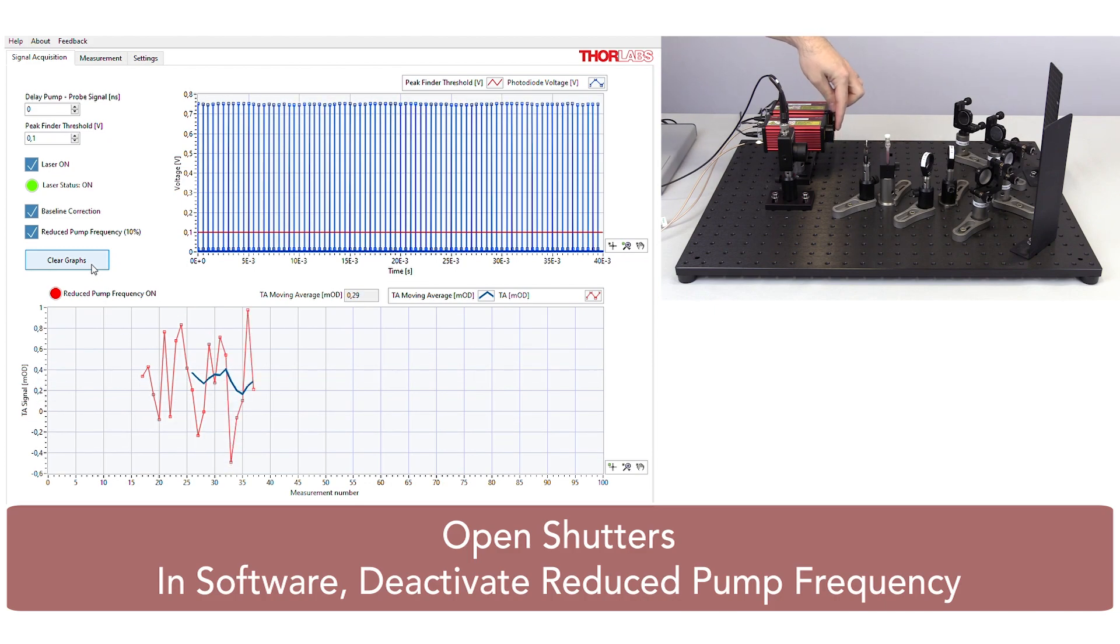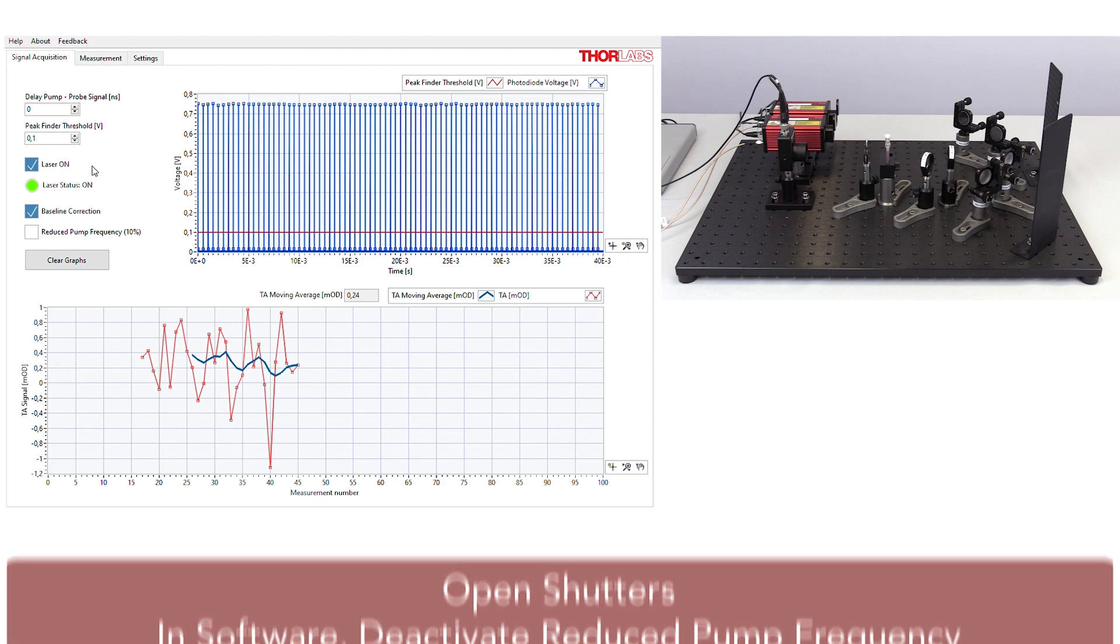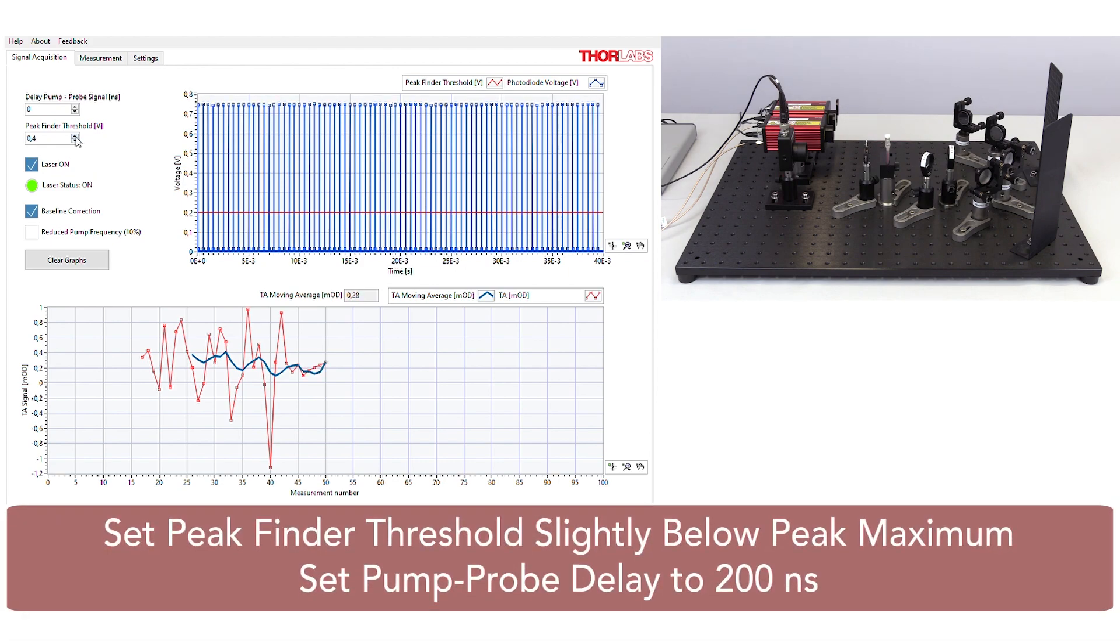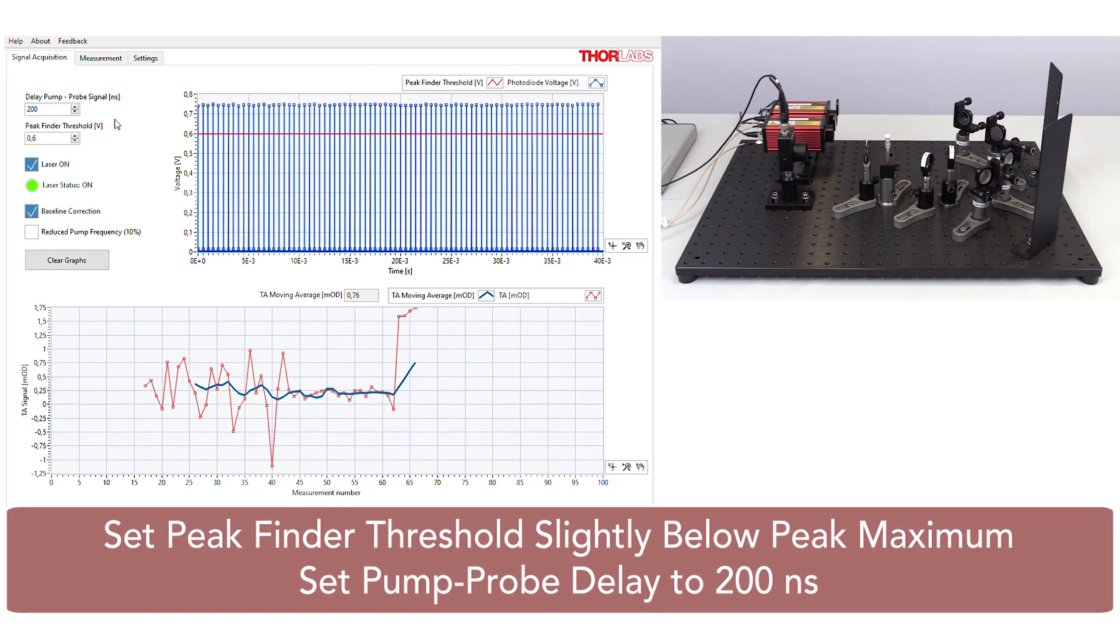In the software, deactivate the reduced pump frequency setting. Set the peak finder threshold slightly below the maximum peak value and set the pump probe delay to 200 ns.